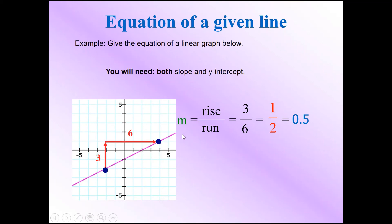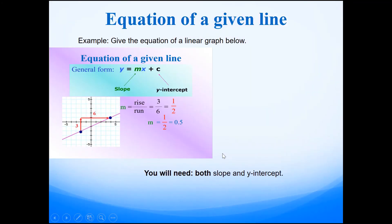Then we need to trace the y-intercept value. Y-intercept means the place where the line crosses the y-axis. It crosses at a y value of negative 1. So the y-intercept is negative 1.